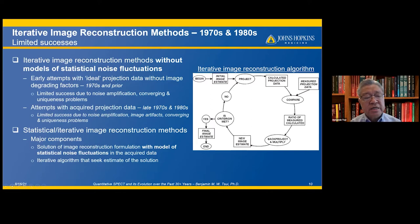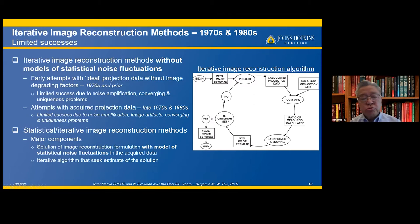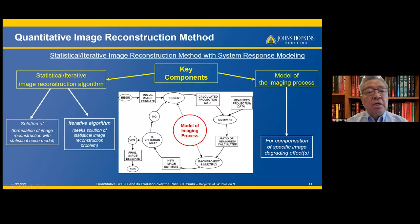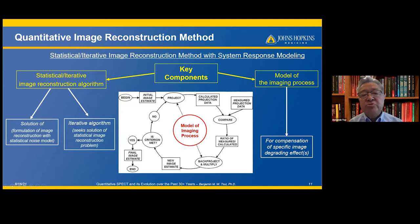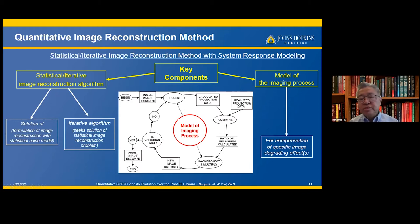The second major category is so-called statistical iterative image reconstruction methods, based on the solution of an image reconstruction formulation with a model of statistical noise fluctuation. The iterative image reconstruction method is used to seek an estimate of the solution. Quantitative image reconstruction is basically a statistical iterative image reconstruction method with system response modeling.